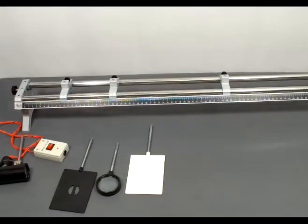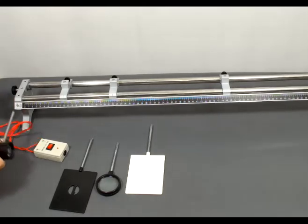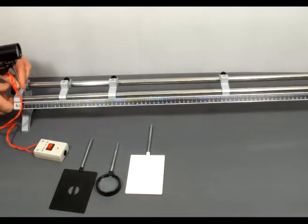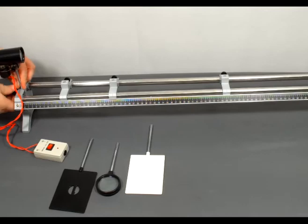The general assembly is going to be the same for every experiment, but the components will change. First thing I'm going to do is put on the light source on the end and tighten it.